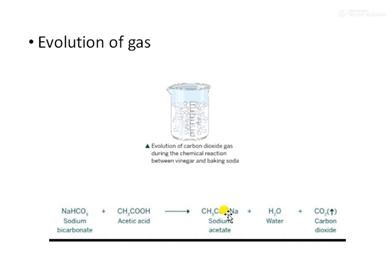The third characteristic of chemical change is evolution of gas. In some chemical reactions, gases are produced — these gases are actually the products formed after the reaction. Gases that evolve can be identified by carrying out some chemical tests.